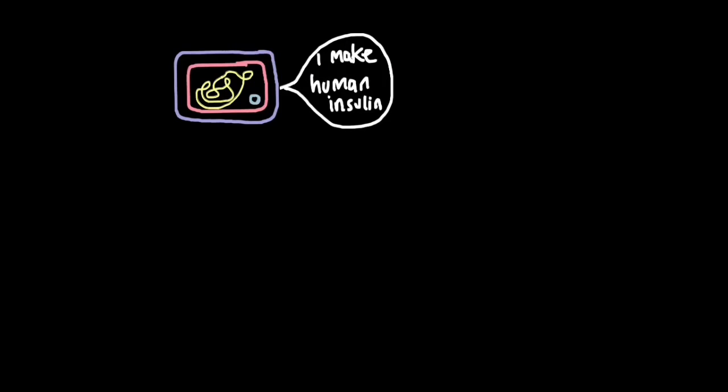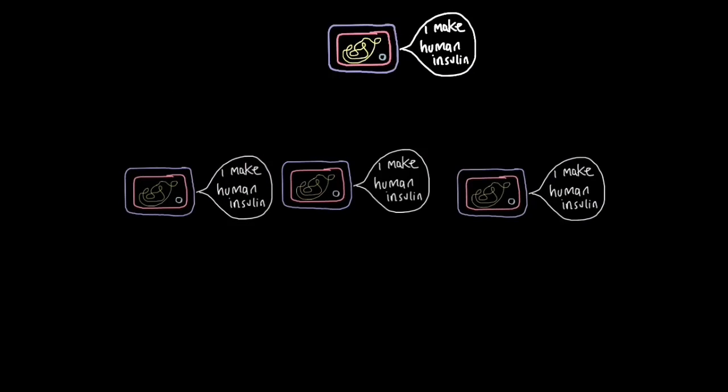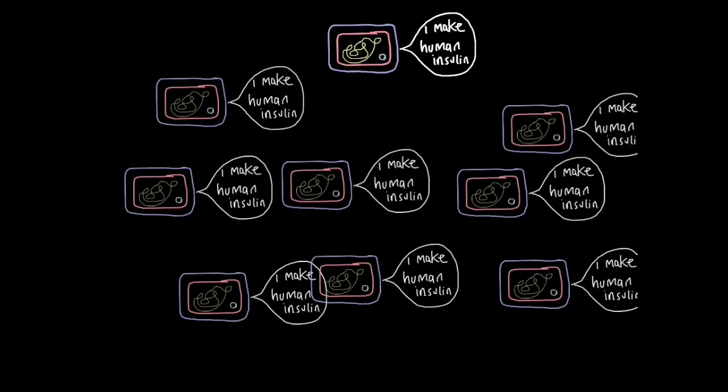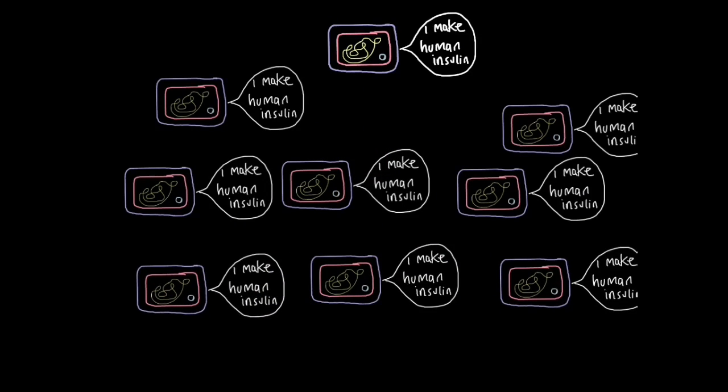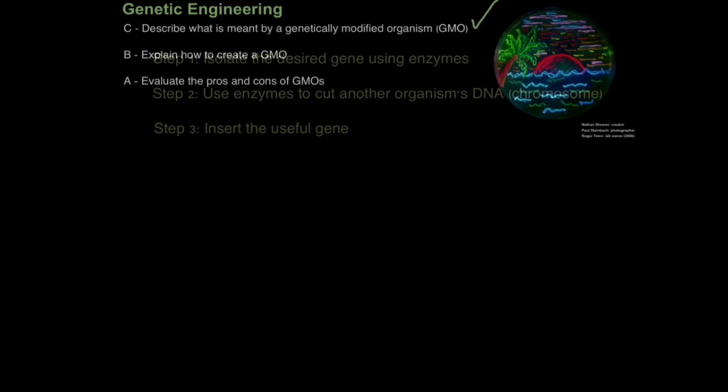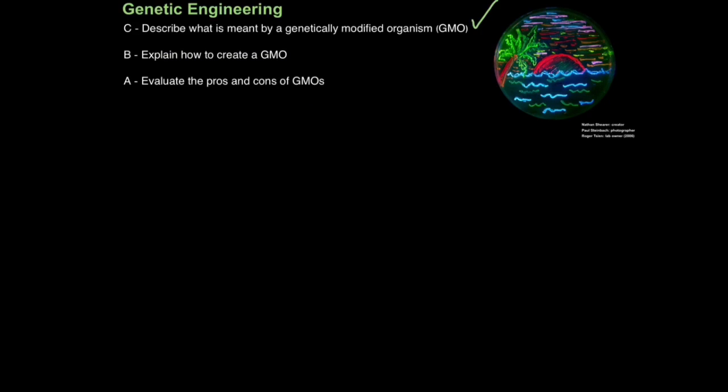So, now this bacteria contains the gene which allows it to express the protein that makes human insulin. And because bacteria replicate very rapidly, in very short spaces of time, we can produce lots of bacteria that can make human insulin. So, if you ever have to describe the process of how you make a genetically modified organism, you would just say, isolate the desired gene using enzymes, use enzymes to cut another organism's DNA, insert the useful gene. Simple three-mark answer. And that is how you explain how to create a genetically modified organism.